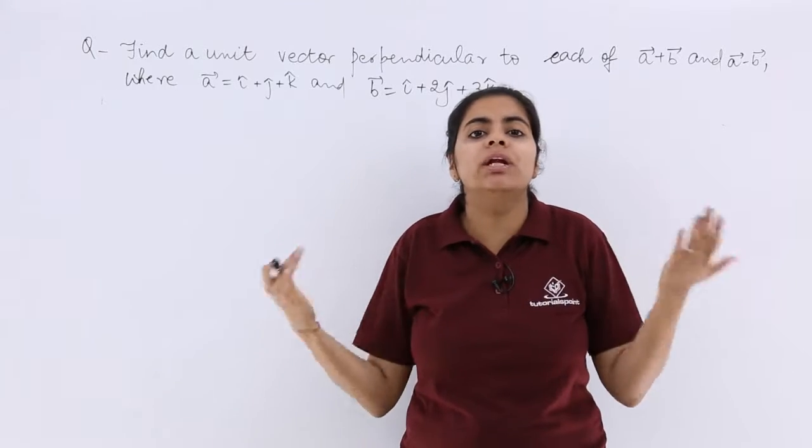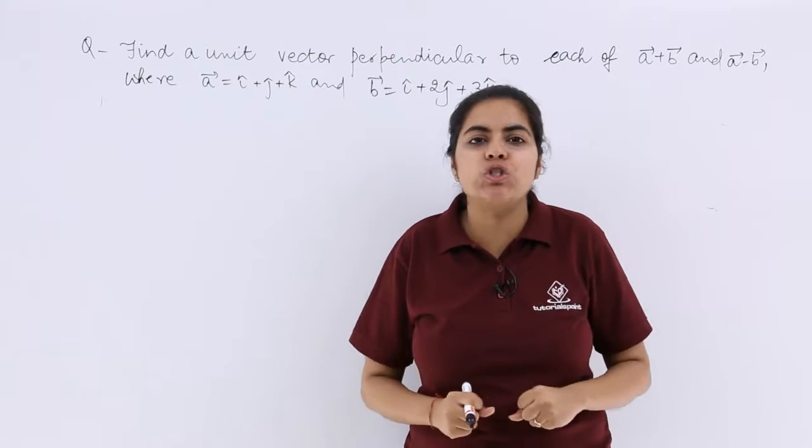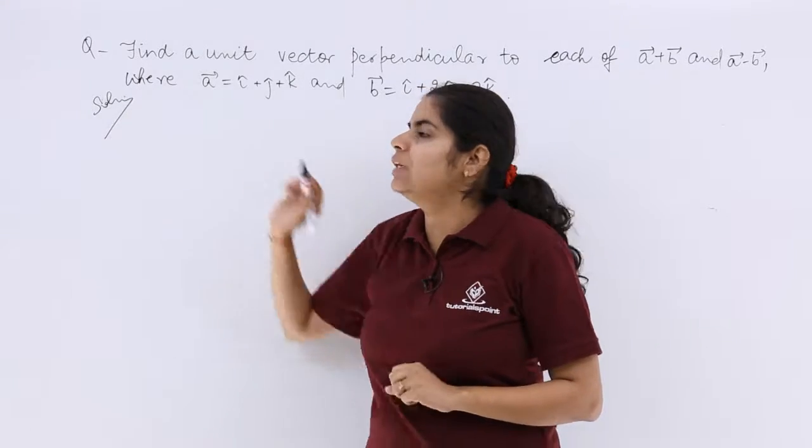So you have to find a unit vector perpendicular to something. That means you have to use cross product. So I write solution and I know that definitely we need cross product.